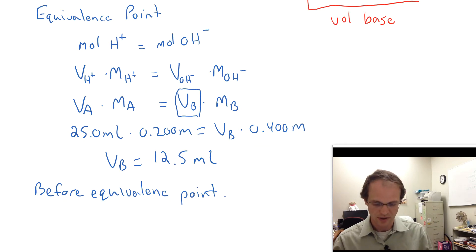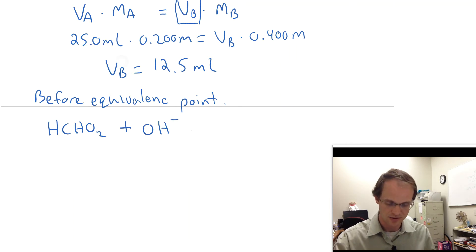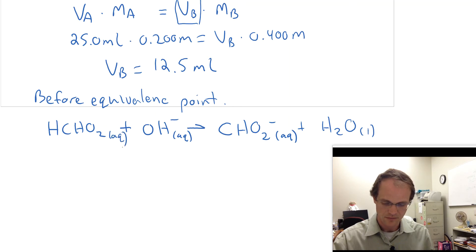So what do we do when we're before the equivalence point? Let's think about the reaction we're doing. We are taking some formic acid, HCHO2, we are adding hydroxide, we're adding sodium hydroxide, but it's soluble, so it's really the hydroxide that's doing it. And there is an equilibrium reaction between it, but you know what, it's so strong it's going to really drive just to the right, so I'm just going to draw a right arrow there. And what we're going to make is the formate ion and some water. Now, to be good, I need to put my phases on there. Our formic acid is reacting with the hydroxide to make the formate ion as well as water.